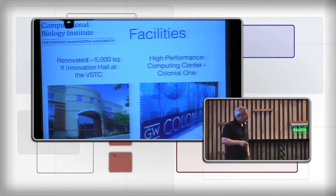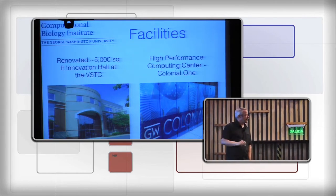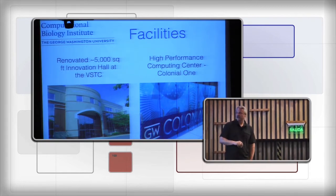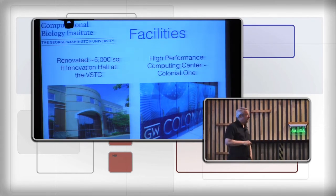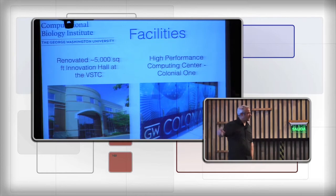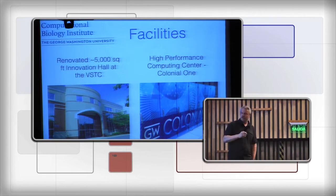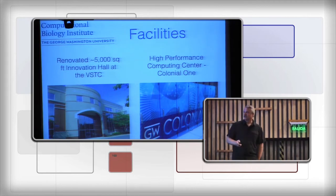The Computational Biology Institute at GW is located in Ashburn, Virginia, in Northern Virginia — about 40 minutes from the downtown campus in Washington, D.C. We're right next to Dulles Airport and Howard Hughes Medical Institute. We've got nice facilities — this is our building, we're on the third floor. Colonial One is our high performance computing center, also on the Virginia campus. We have good access to computational space and office space for faculty, postdocs, graduate students, undergraduates, and visitors.